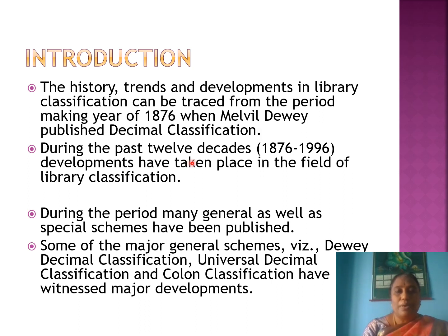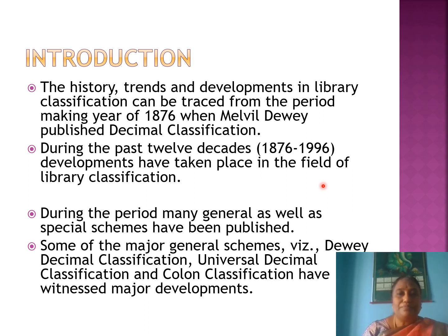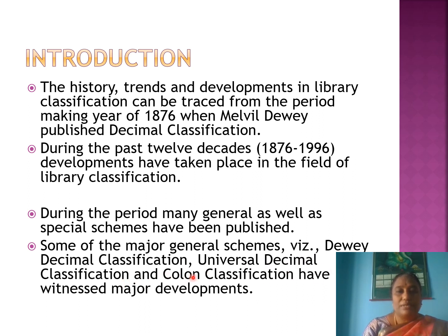During the past 12 decades — from 1876 to 1996 — major developments have taken place in the field of library classification. These 12 decades are very significant. During this period, both general as well as special classification schemes were published. The major general schemes include DDC (Decimal Classification), UDC (Universal Decimal Classification), and Colon Classification, all of which witnessed major developments.